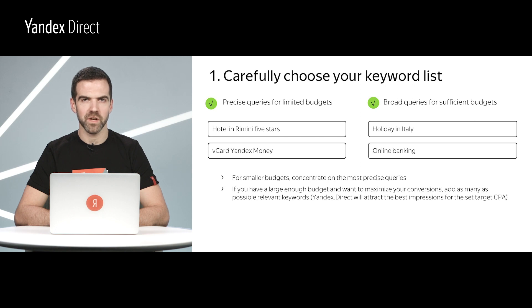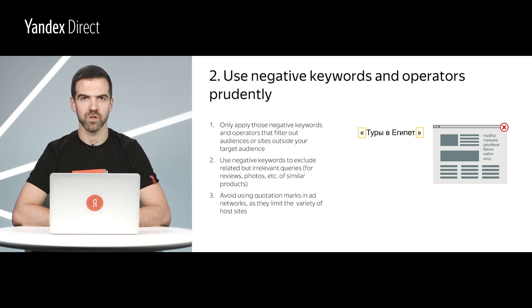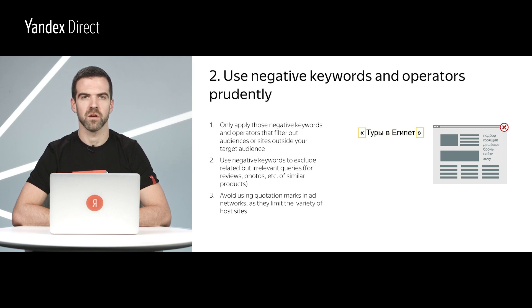Later on, you can expand your reach with broader keywords if necessary. In ad networks, it is especially important to use operators prudently. Overusing them can significantly reduce your reach. Only apply those negative keywords and operators that filter out audiences or sites outside your target audience. Use negative keywords to exclude related but irrelevant queries for reviews, photos, etc. of similar products. Avoid using quotation marks in ad networks, as they limit the variety of host sites.